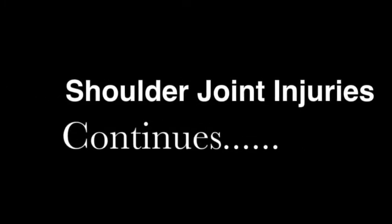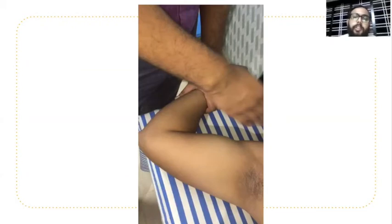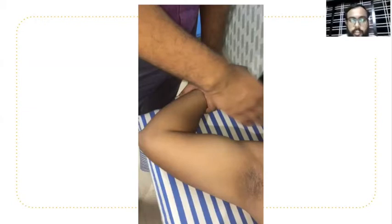Hi friends, in this video I would like to continue the shoulder part 2. First I would like to discuss about shoulder joint injuries, SLAP tear, clavicle fracture, and then shoulder joint pathologies, ending with the rehabilitation and management principle of acute injuries and chronic pathologies.